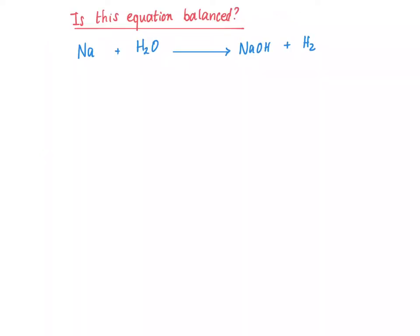If we look at one more example: sodium plus water goes to sodium hydroxide and hydrogen — is this equation balanced? We can use exactly the same process: draw out all of the atoms, count them, and see if the number of atoms of each element are the same on the left hand side as on the right hand side.